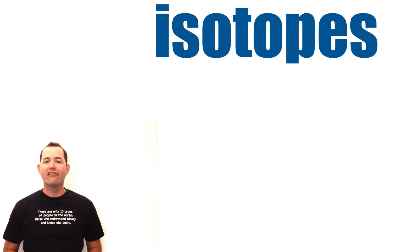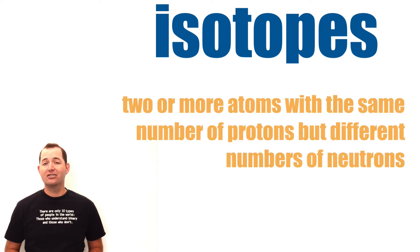One type of atom can have multiple isotopes. An isotope is two or more atoms with the same number of protons but different numbers of neutrons.